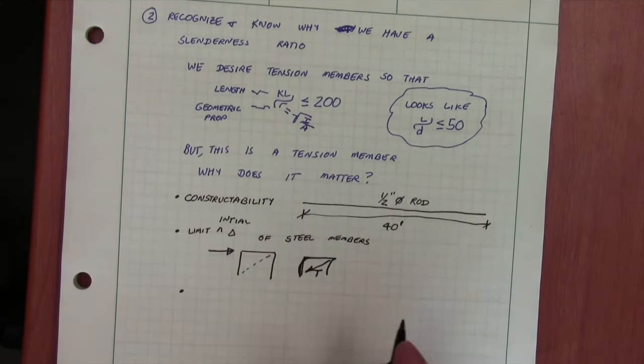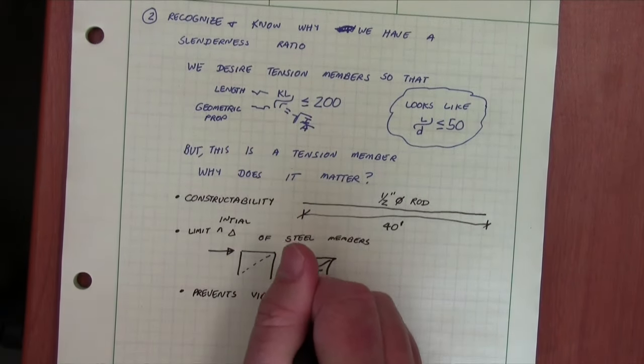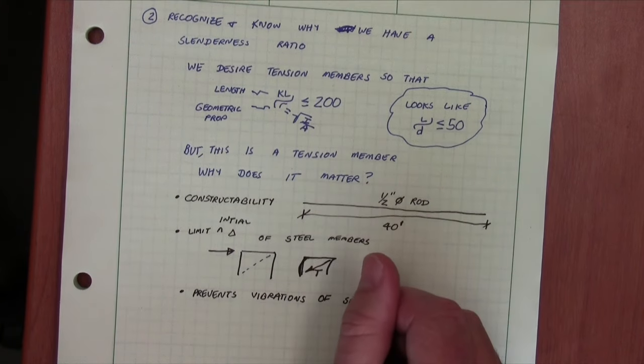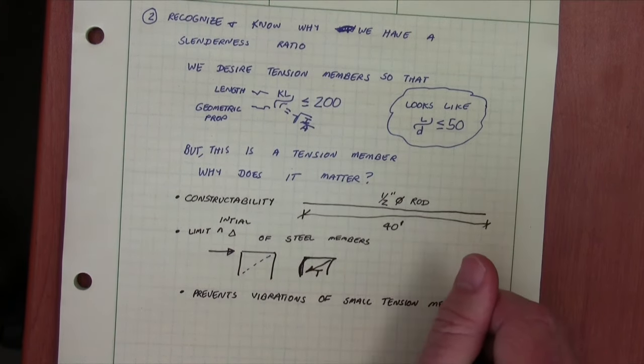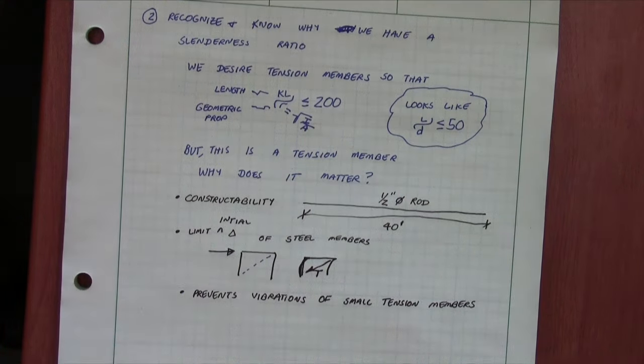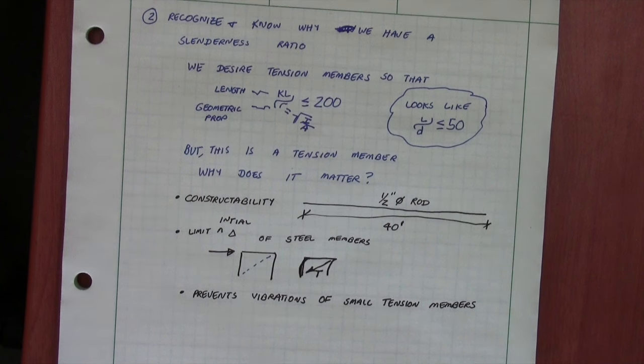The last item is that it prevents vibration of small tension members. We did a church one time that had steel tension members in the walls and every time the mechanical unit turned on, the tension members vibrated because they didn't meet KL over R less than 200.